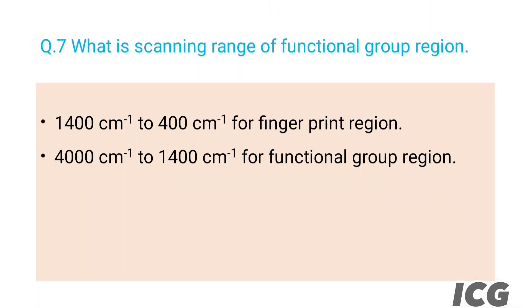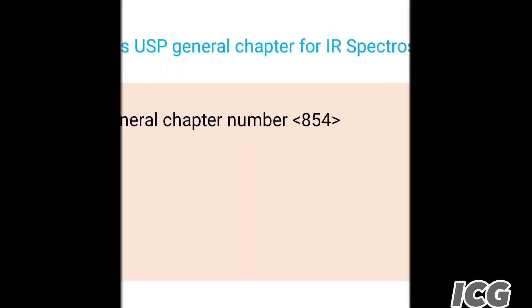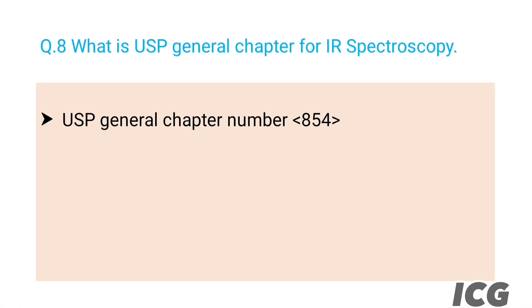The next question is: what is the scanning range of the fingerprint and functional group regions? The answer is for the fingerprint region, its range is 1400 cm⁻¹ to 400 cm⁻¹. The next question is: what is the USP general chapter for IR spectroscopy? The answer is USP general chapter number 854.